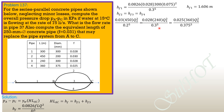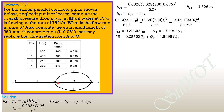Solving these relations: Q2 = 0.25603 Q3 and Q4 = 1.50952 Q3. Applying continuity: Q1 = Q2 + Q3 + Q4, so 75 = 0.25603 Q3 + Q3 + 1.50952 Q3. Solving, Q3 equals 27.12 liters per second.